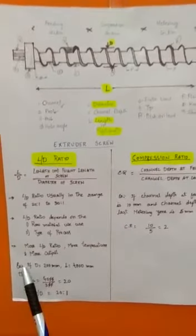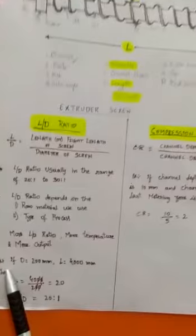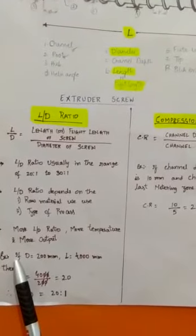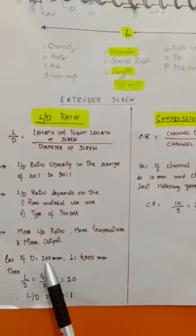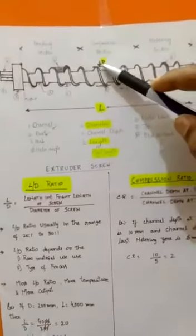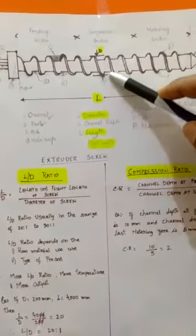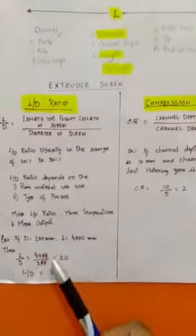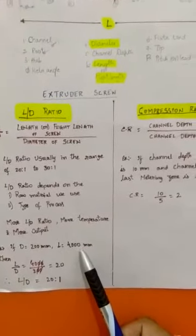Let's take an example for L by D ratio calculation. If the diameter of the screw is 200, and length of the screw is 4000.